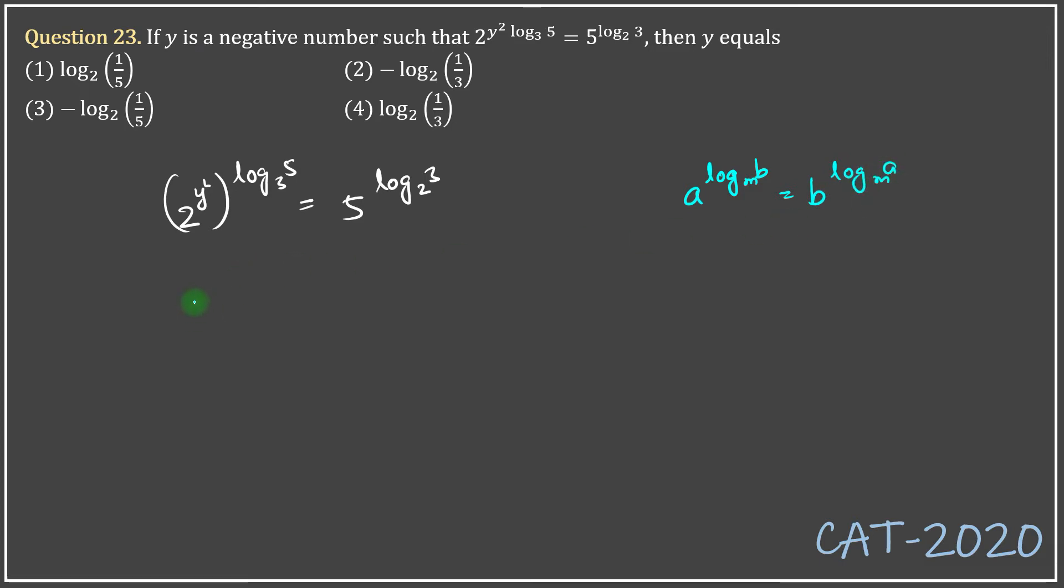So here, I'll use it as 2 to the power log 5 to the base 3 equals, now this becomes 5 to the power log 2 to the base 3 equals 5 to the power log 3 to the base 2.